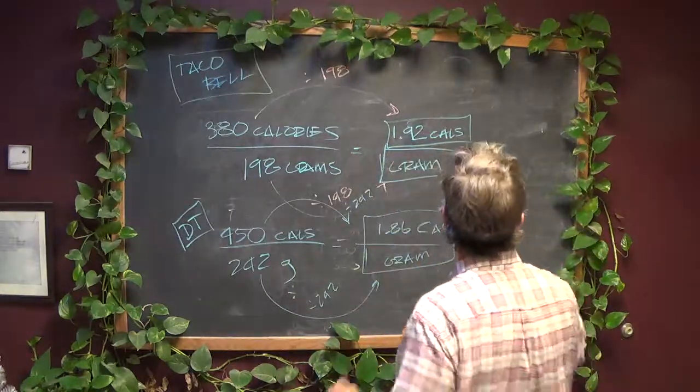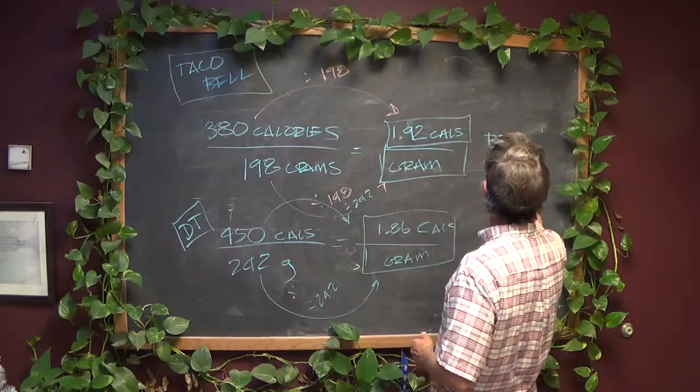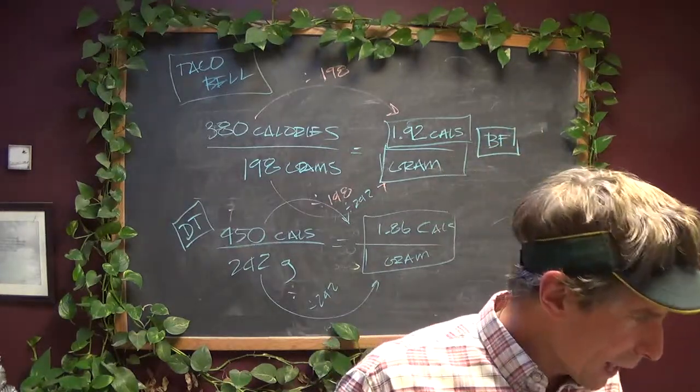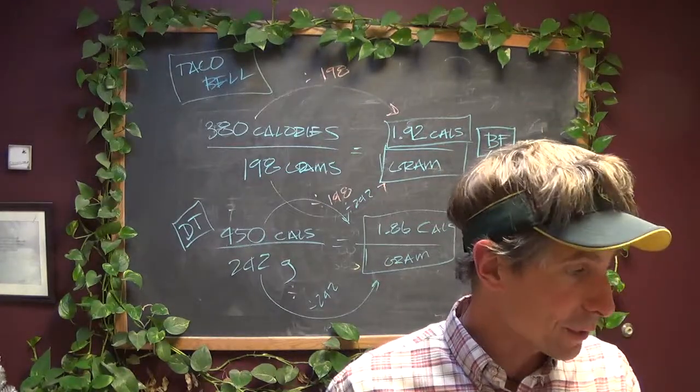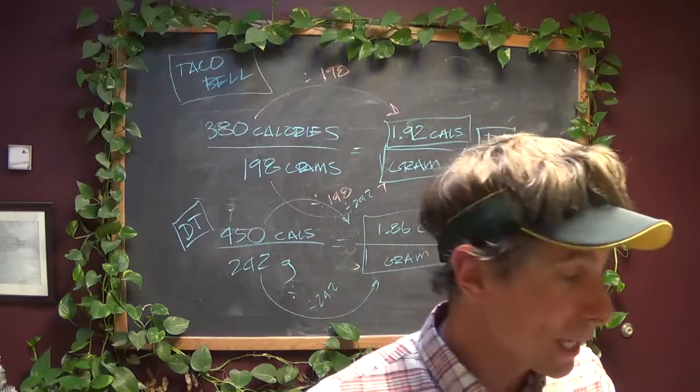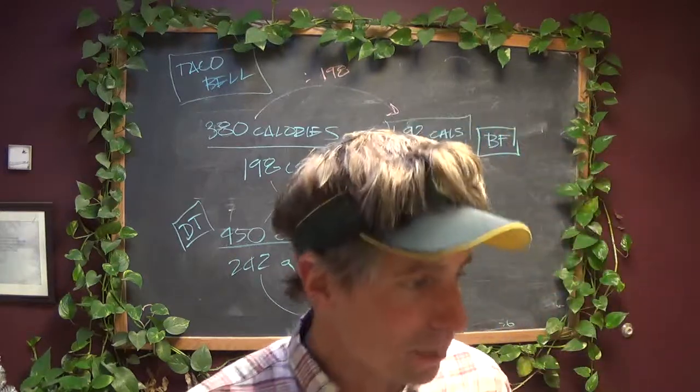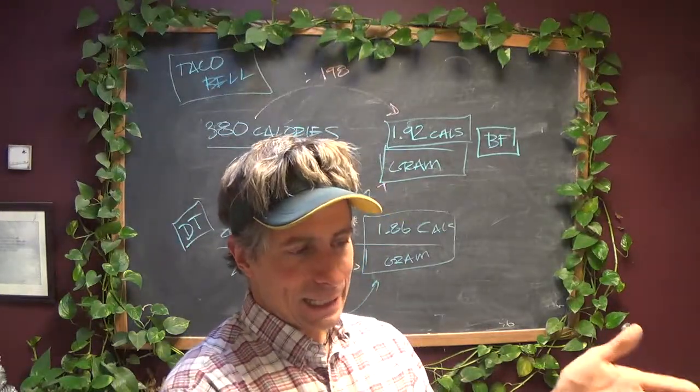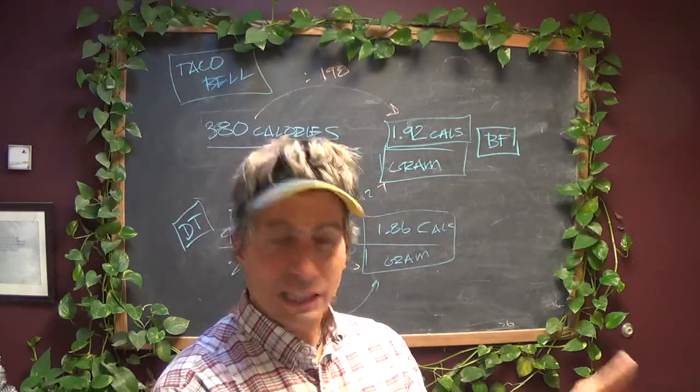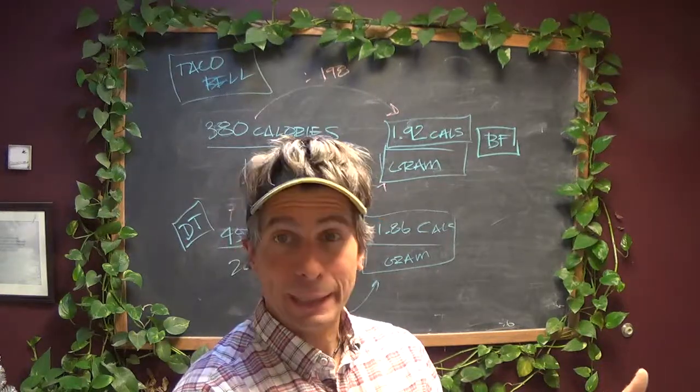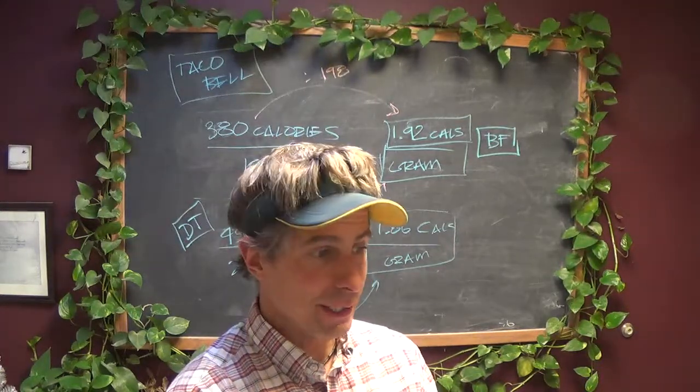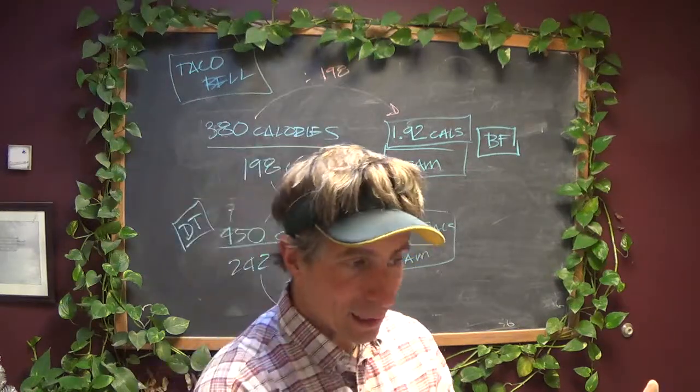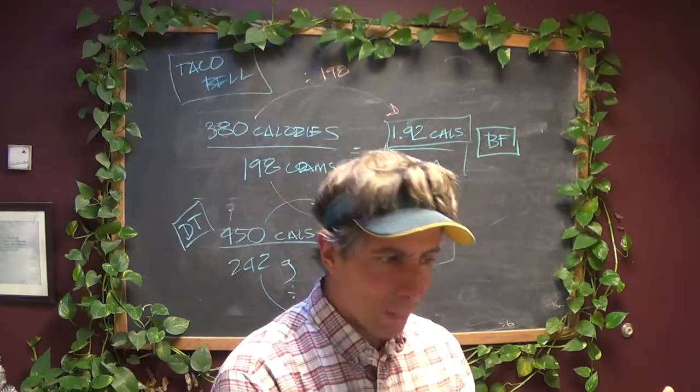The last one is Baja Fresh. Baja Fresh has 860 calories, but it's got 473 grams. If you just look at the quantities of the numbers, 860 is less than double the 450 behind it, which is the Del Taco.